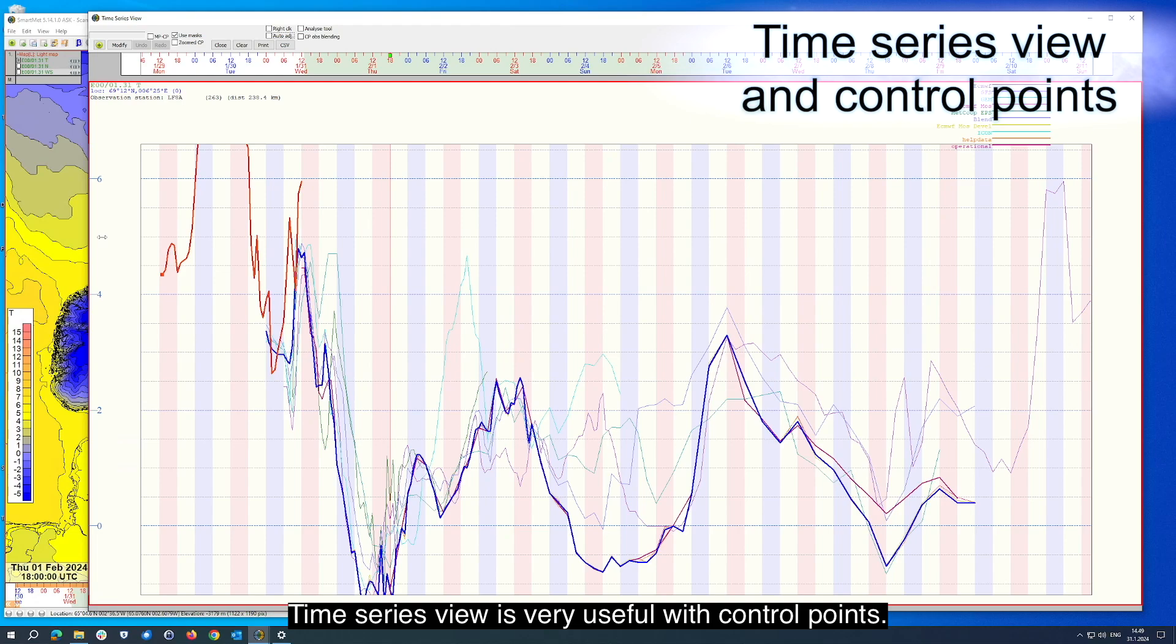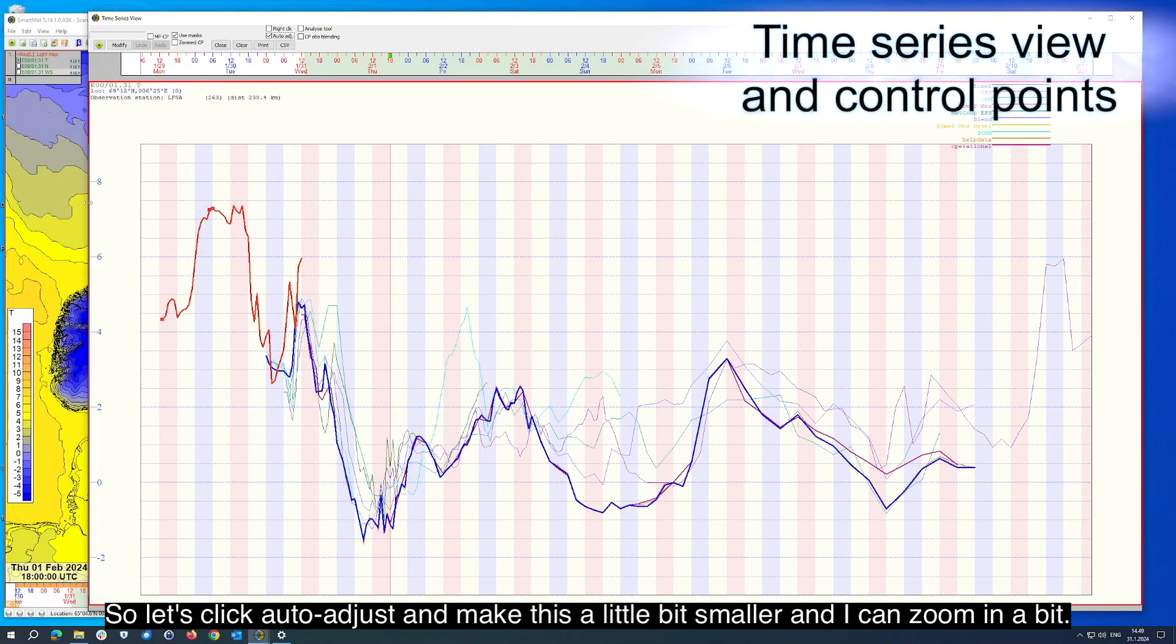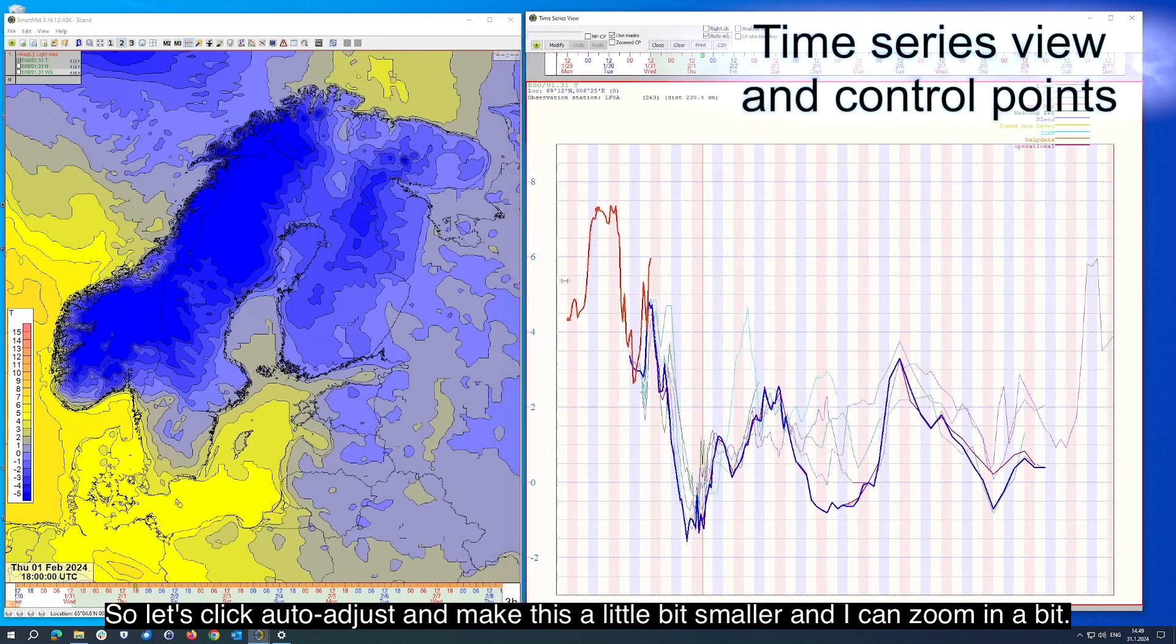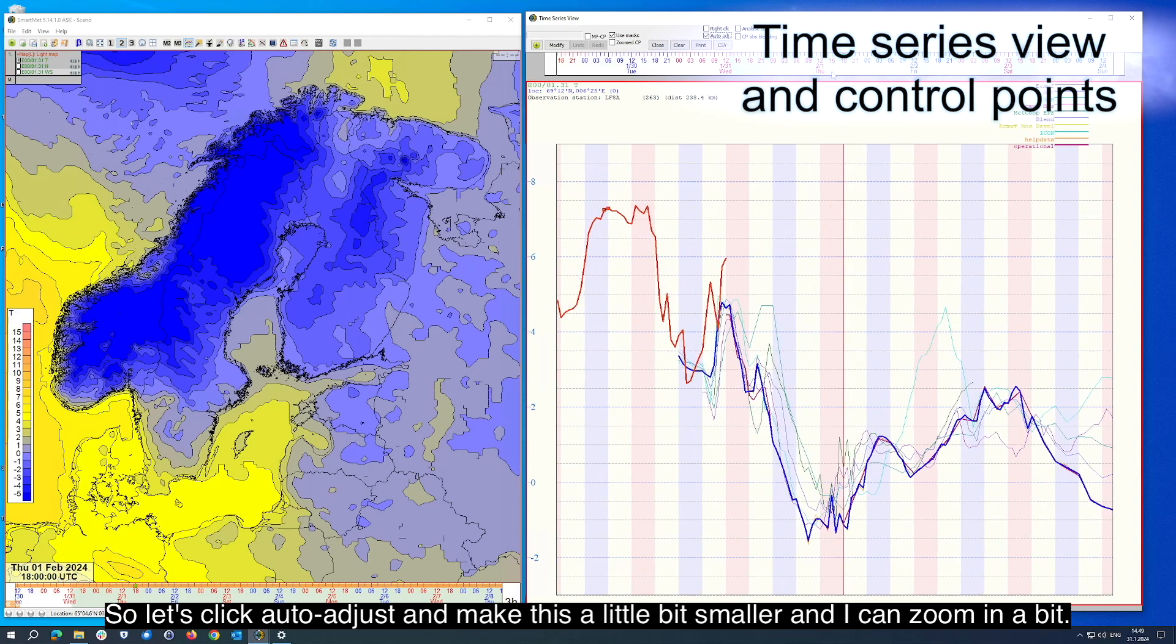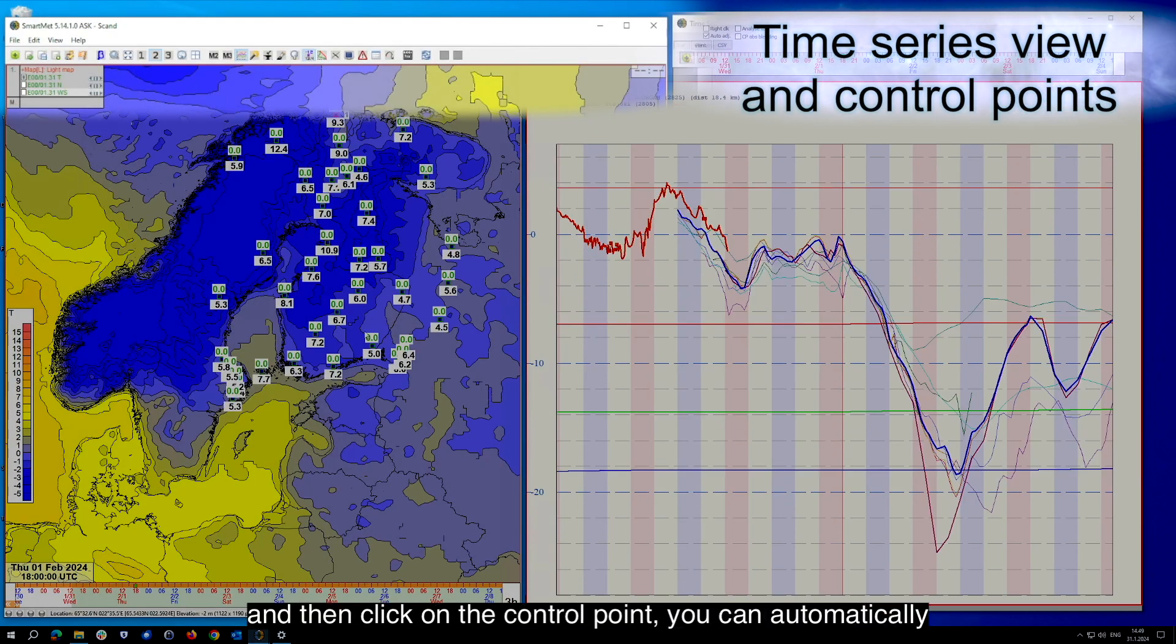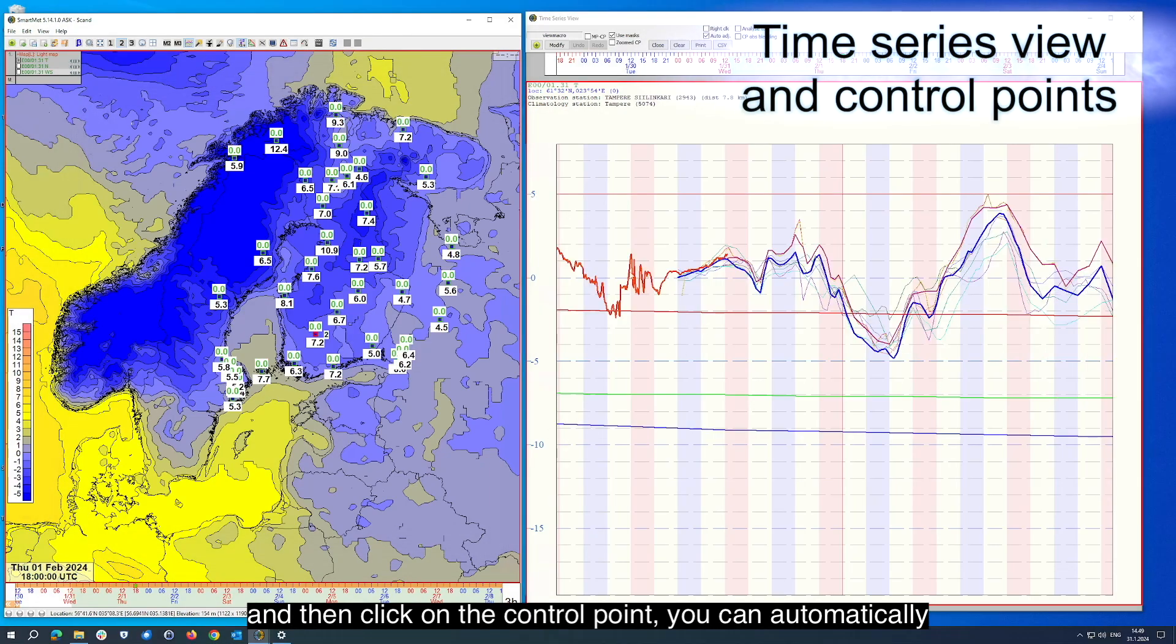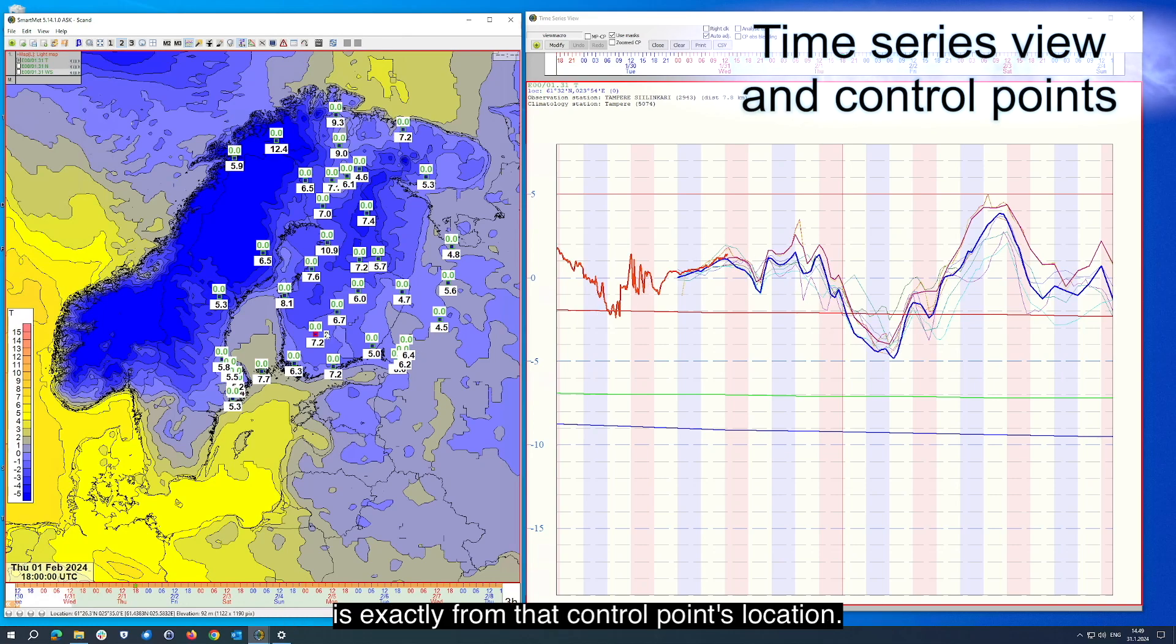Time series view is very useful with control points. So let's click auto adjust and make this a little bit smaller, then I can zoom in a bit. If I tick on this control point mode and then click on the control point, you can automatically see how the curve I see on the right hand side now is exactly from that control point's location.